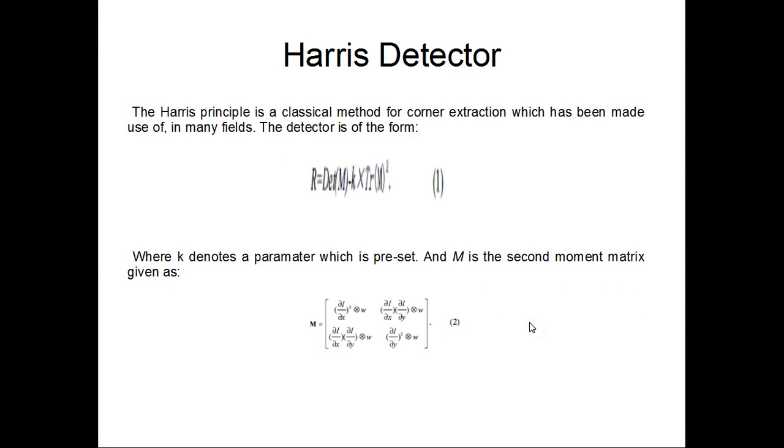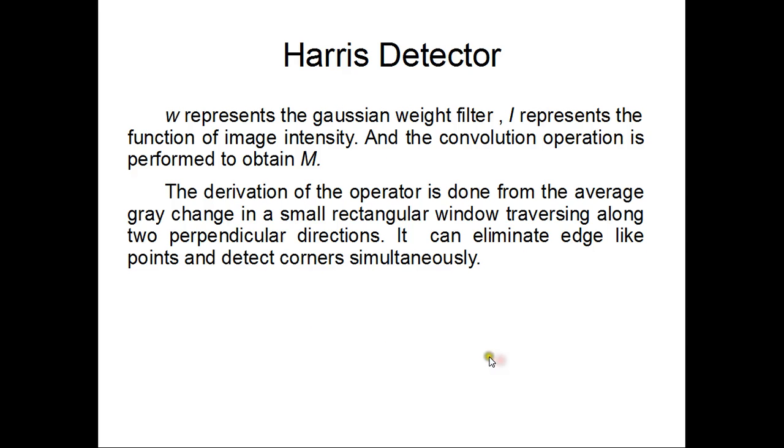Let's move to the next detector, that is the Harris detector. The Harris detector is a classic method for corner extraction which has been made use of in many fields. The detector is of the form R = det(M) - K × trace(M)^2, where K denotes a parameter which is preset and M is the second moment matrix given as this, where this is the convolution operator. W represents the Gaussian weight filter, I represents the function of image intensity, and the convolution operation is performed to obtain M. The derivation of the operator is done from the average gradient change in small rectangle window traversing along two perpendicular directions. It can eliminate edge-like points and detect corners simultaneously.